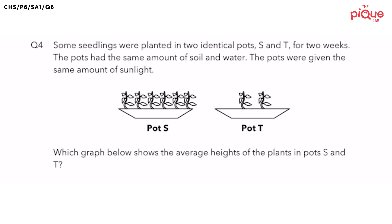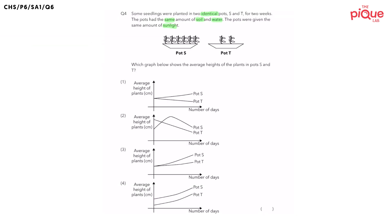This question tells us that some seedlings were planted in two identical pots for two weeks. The pots had the same amount of soil, water and sunlight. Now, the question is asking us, which of the following graphs below shows the average heights of the plants in pots S and T?